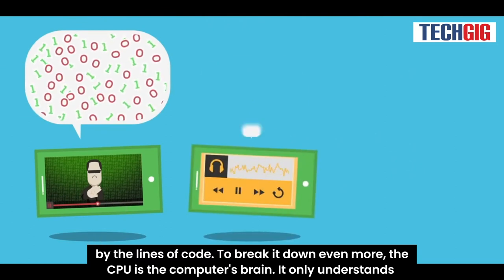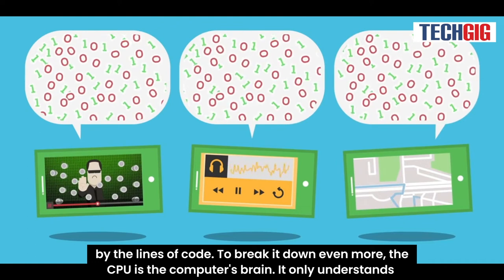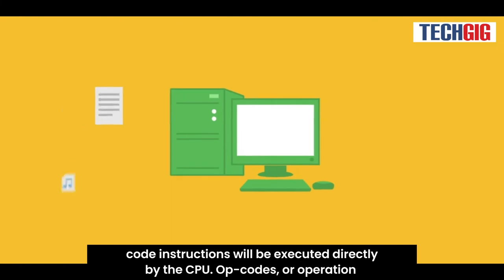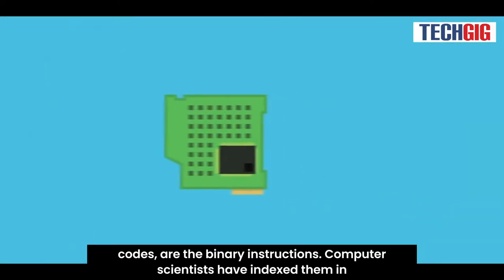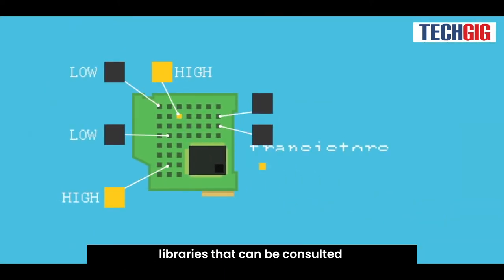To break it down even more, the CPU is the computer's brain. It only understands machine code, which is a language made up entirely of ones and zeros. Machine code instructions will be executed directly by the CPU. Op codes, or operation codes, are the binary instructions. Computer scientists have indexed them in libraries that can be consulted.